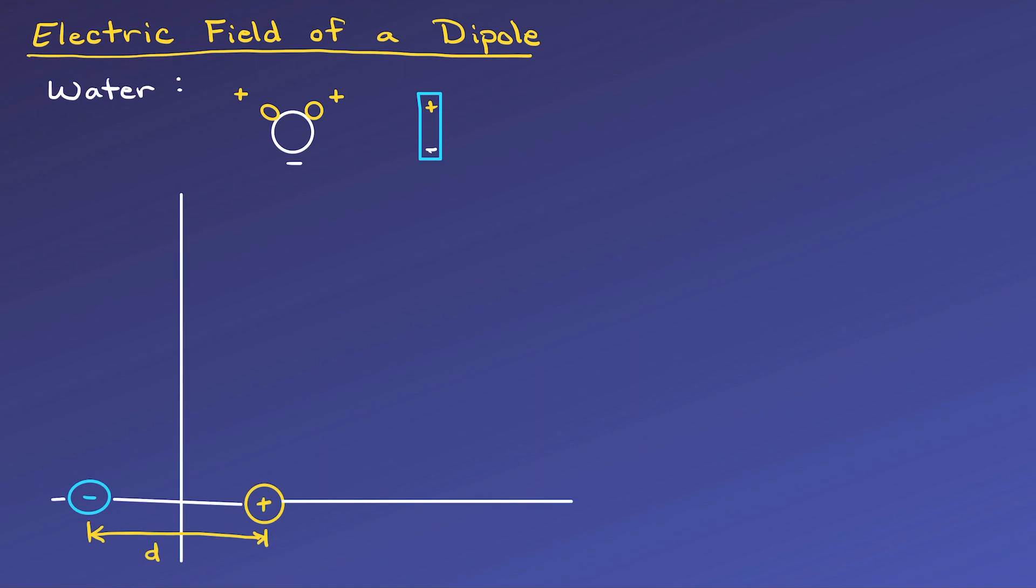We'll model the dipole as equal positive and negative point charges that are small distance d apart. We'll place the origin at the halfway point of the dipole for symmetry. Points to the right or left of the dipole will have electric field of each charge that are in opposite directions.